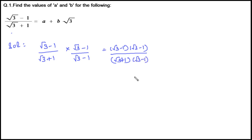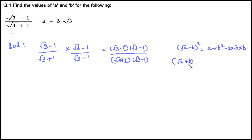Let's write the identities we are going to use. The first identity is (√A − B)² = A + B² − 2√(AB). The next identity is (√A + B)(√A − B) = √(A² − B²), or we can write it as A − B² by cancelling the square and square root.